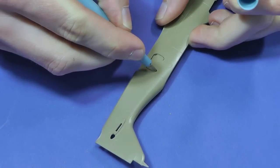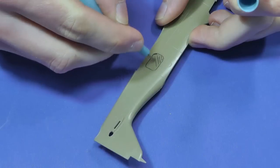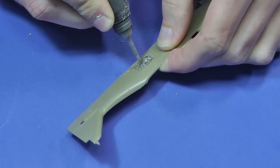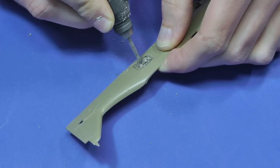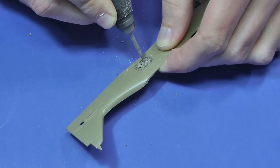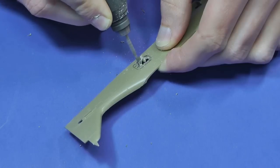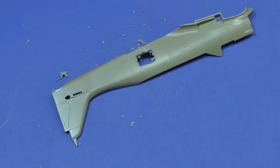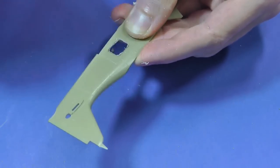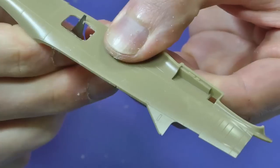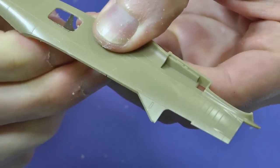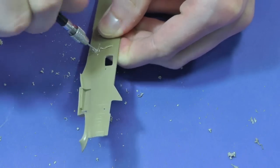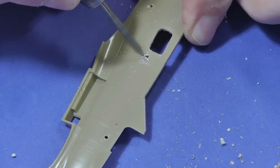I start with marking places which are going to be afterwards removed with Proxxon microdrill. I make a hole with extension head using for milling and then I clean it with a sandpaper and knife. I drill the smaller holes manually before using electric microdrill.